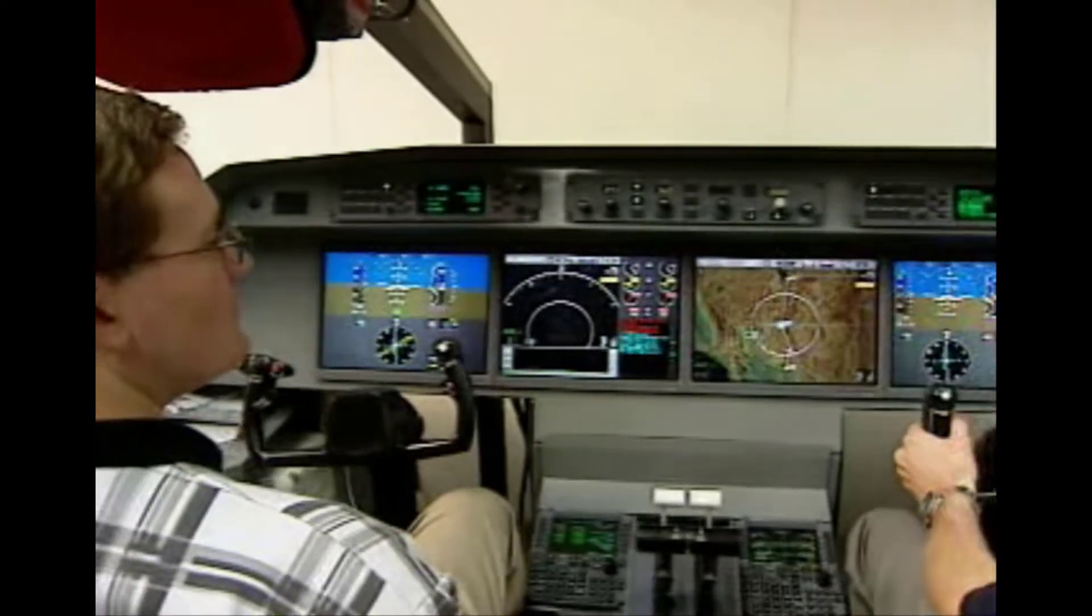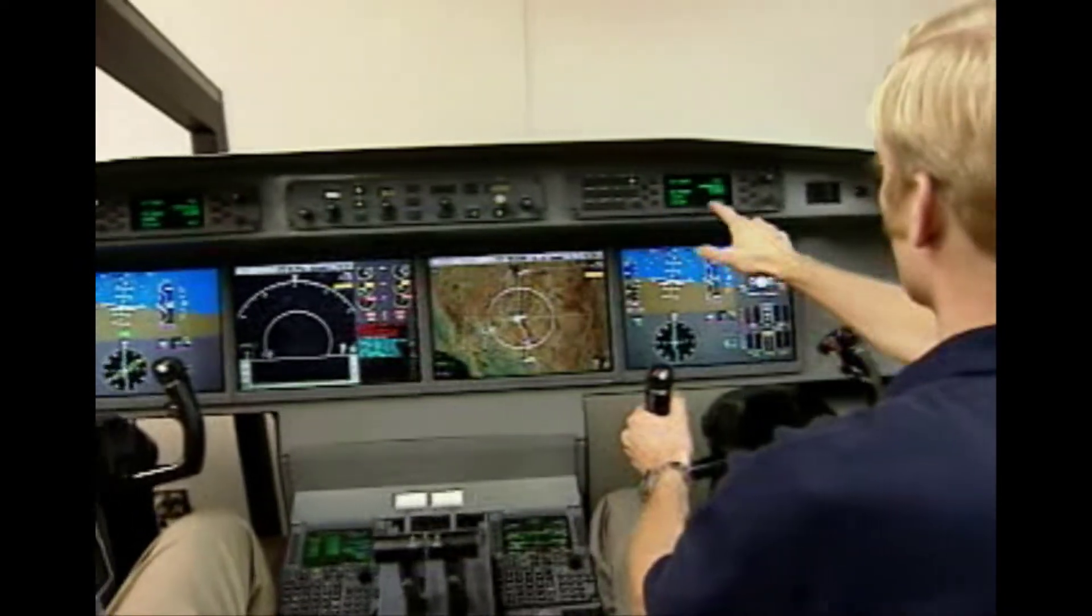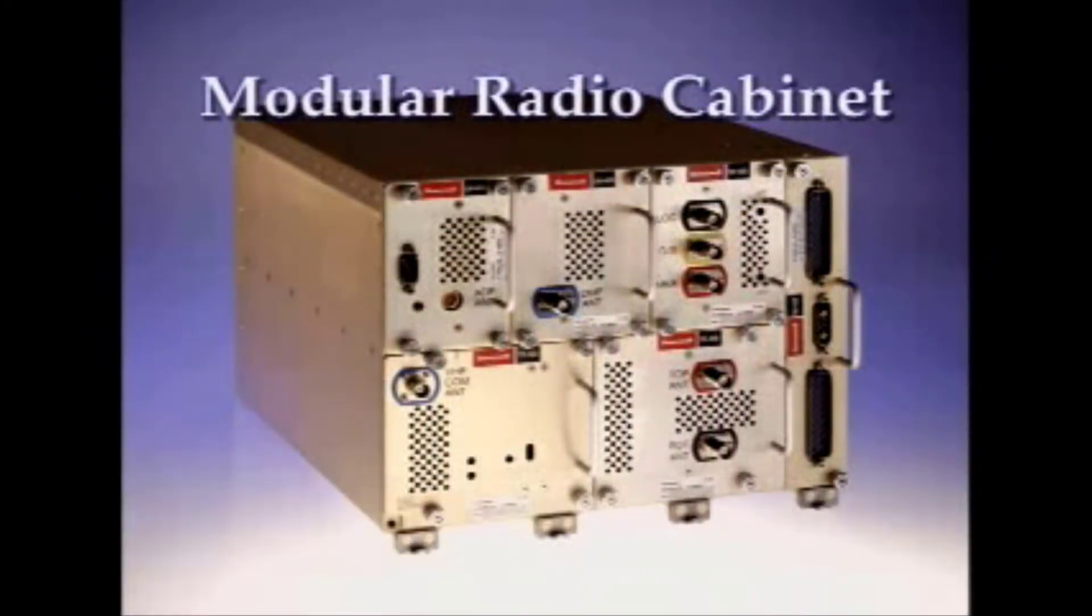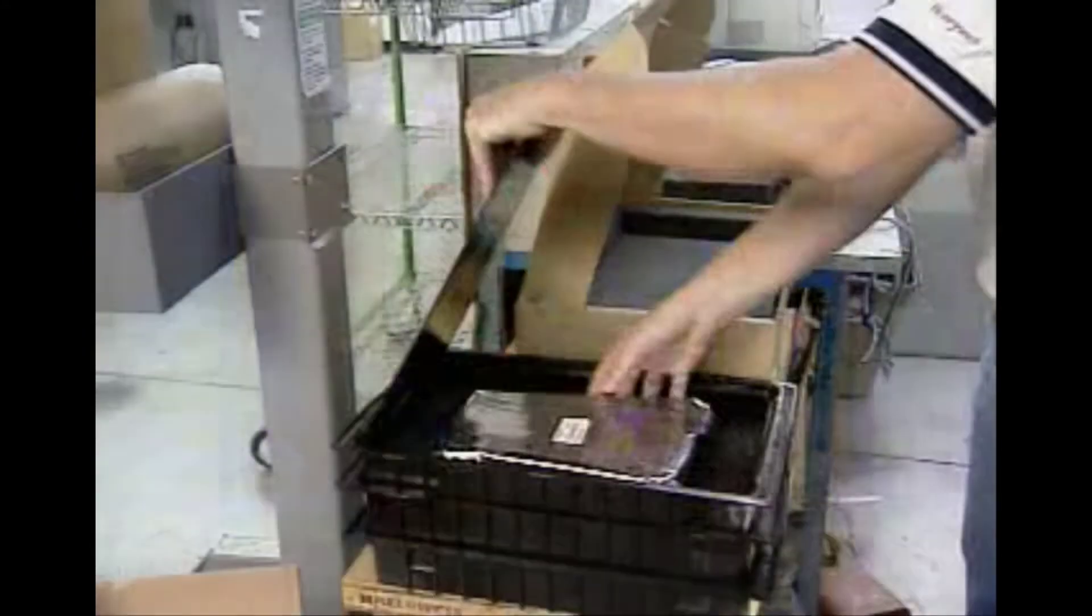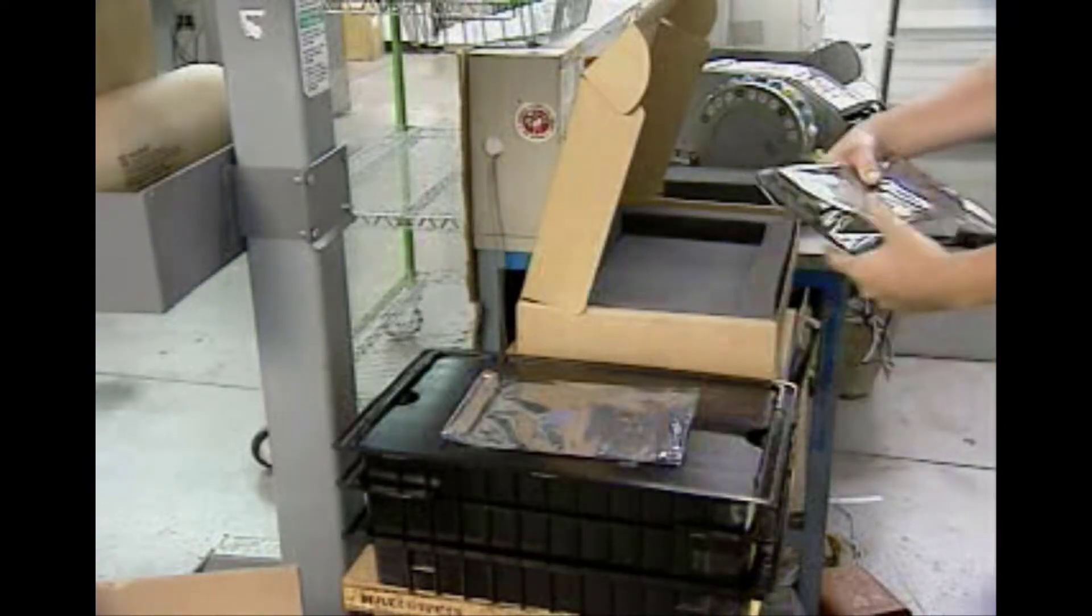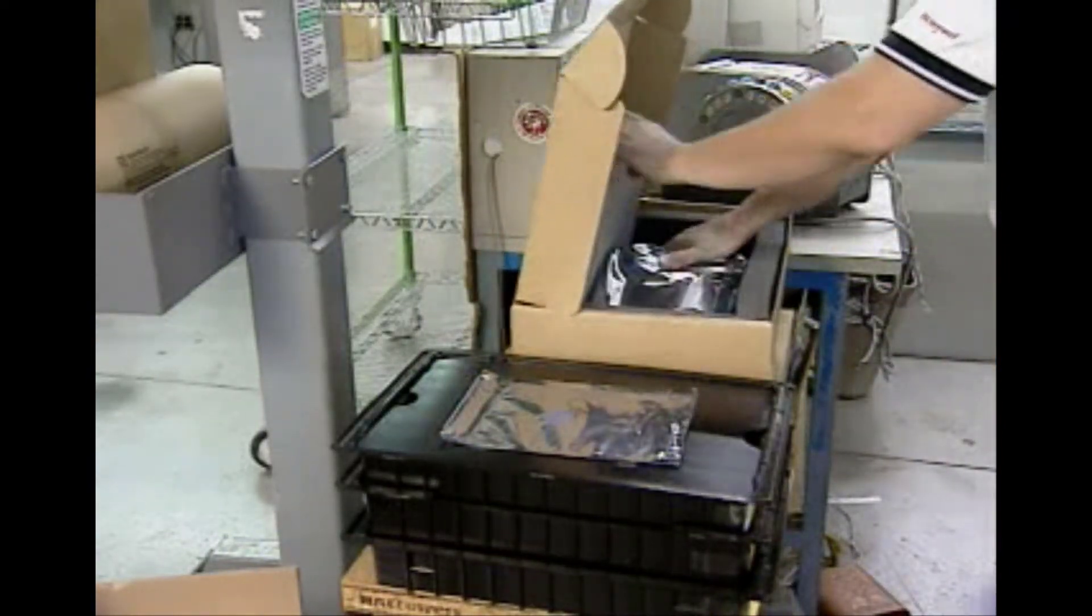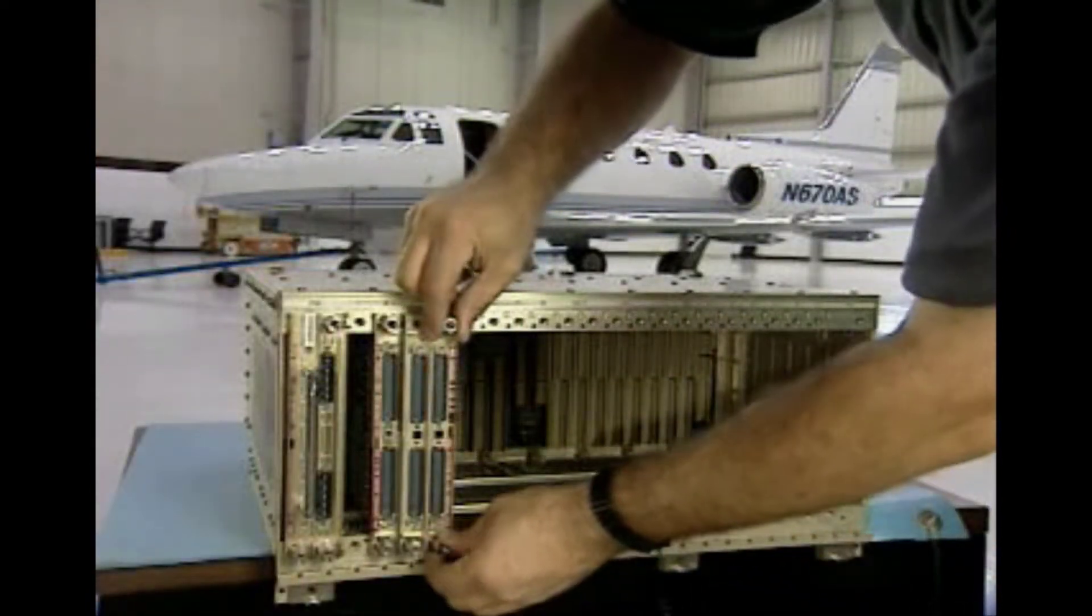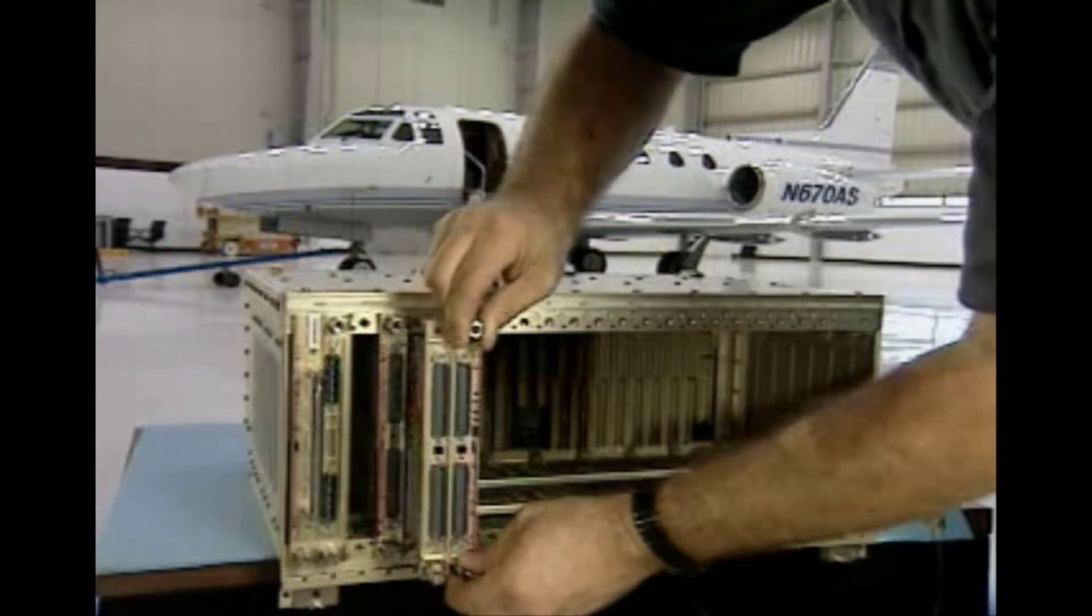This segment will give you an overview of the new features offered by the Primus EPIC in addition to information on its two major components, the modular avionics unit and the modular radio cabinet. In subsequent videos, you will learn the significance of preventing electrostatic discharge, how to package, ship and store the components safely, and the proper methods for installation and removal of Primus EPIC modules.